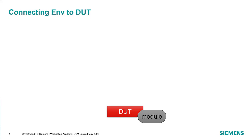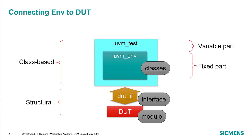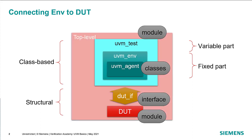Just to set the context again, we have our DUT, which is a module. We have a SystemVerilog interface called DUT-IF. This is the structural part that is connected to our class-based environment made up of the UVM test, which is the variable part — its job is to configure the fixed part, the UVM environment. These are both classes, and the environment includes all of the components we need to communicate with the DUT. In this session, we're going to introduce the concept of a UVM agent, which is a protocol-specific component responsible for connecting through the interface to the DUT and communicating at the signal level. All of this is included in our top-level module.